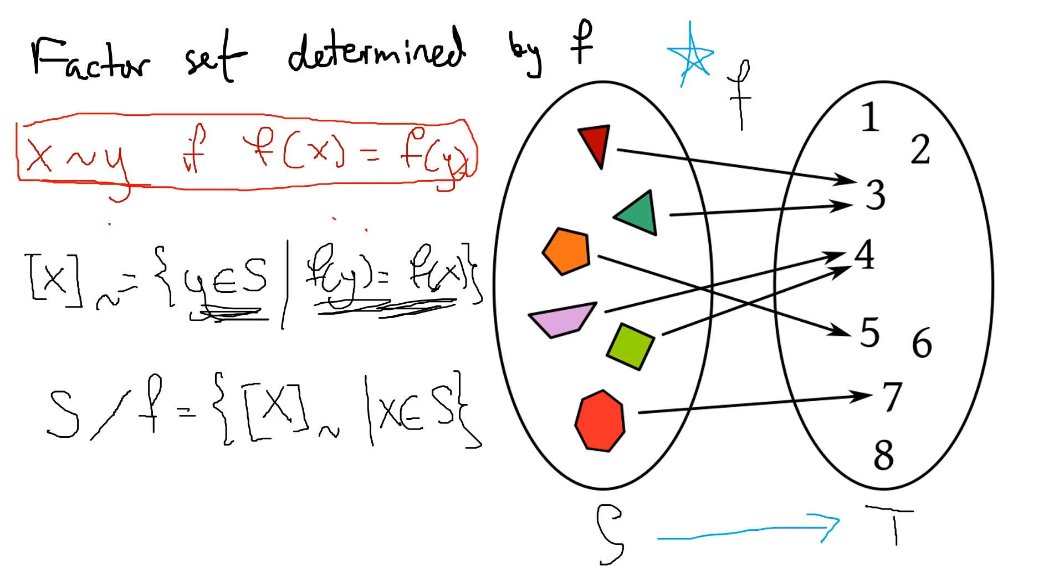F maps these shapes in the domain s to numbers in the domain t. We can partition or split up s into its factor set. We can take s and create s mod f by dividing up the domain into elements that get mapped to the same thing.